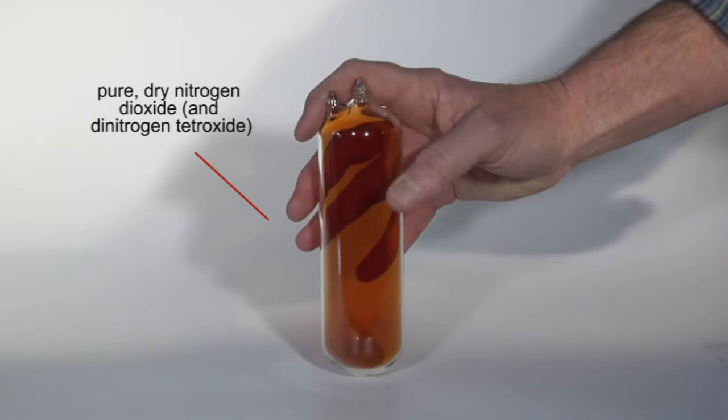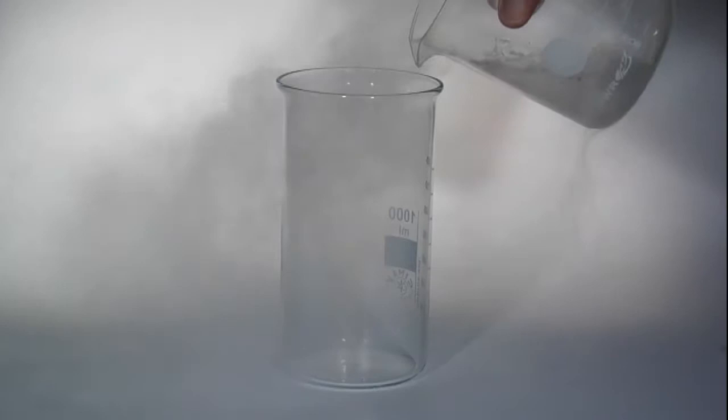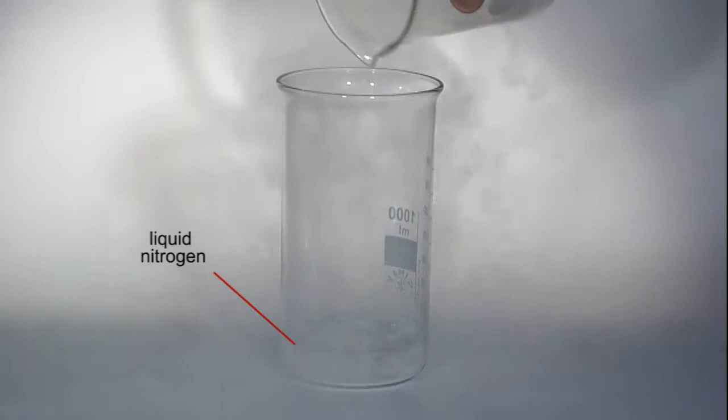Nitrogen dioxide is brown and produces the color of the mixture of the two gases which are present in this equilibrium. Liquid nitrogen is used to cool the mixture down to temperatures approaching minus 200 degrees Celsius.